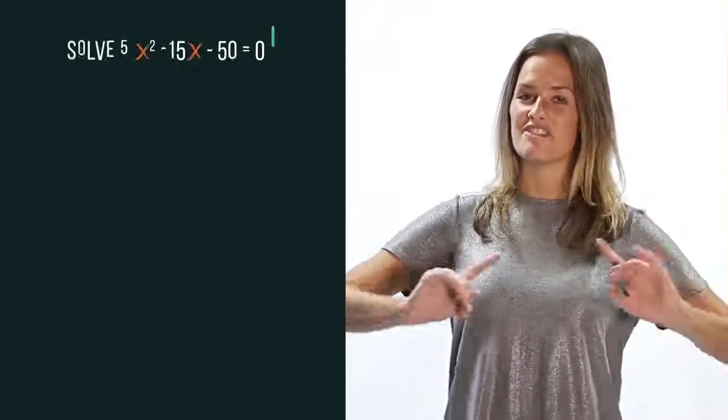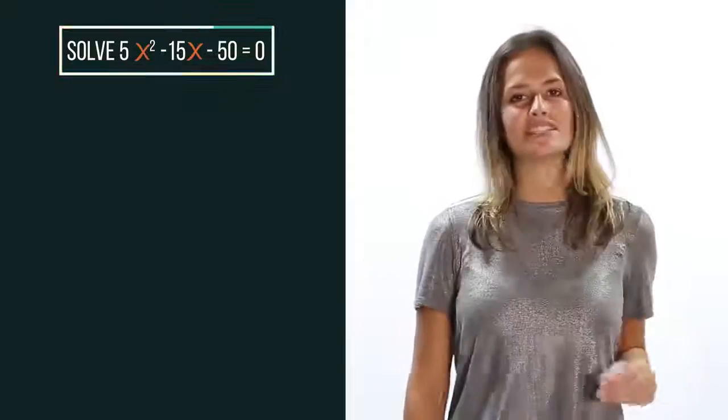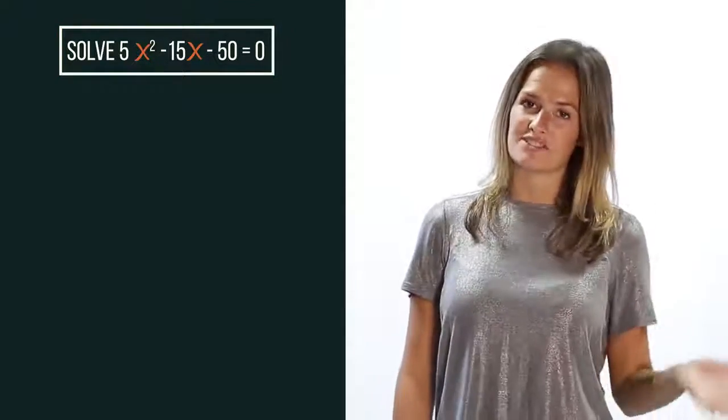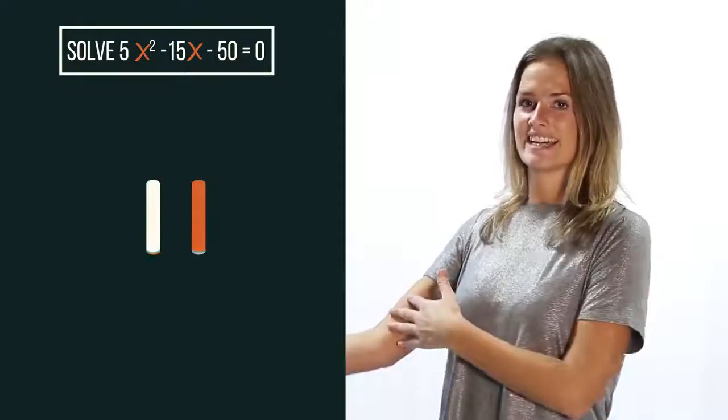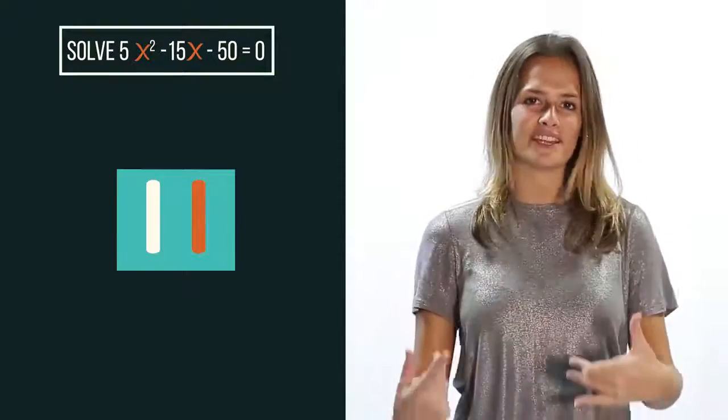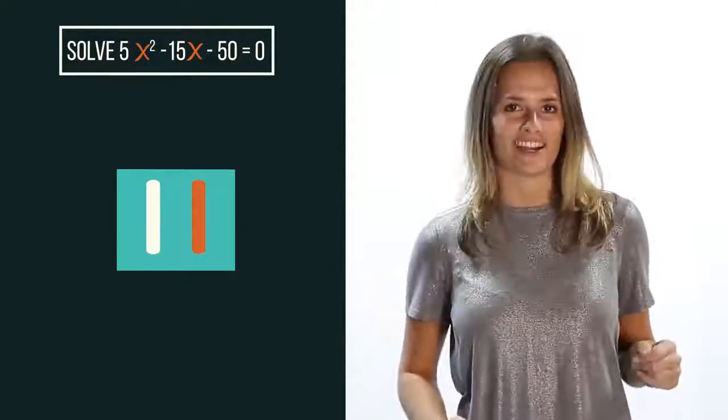So here's one for you to do. Remember to start by factoring out 5 from the 5x squared and the negative 15x. Pause the video, complete the square, and click play when you're ready to check.